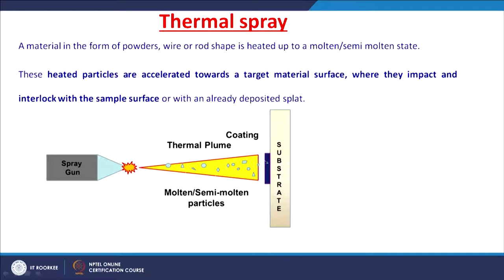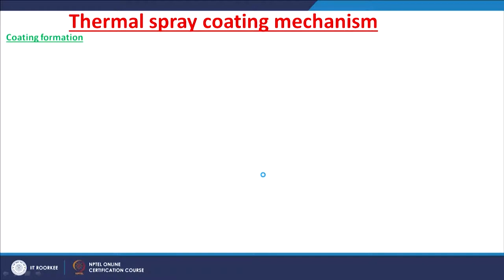After impacting, the particles interlock with each other as well as the surface and then form a dense coating. If you look at this thermal spray technique, with variation in the movement of the spray gun as well as the distance between the substrate and the spray gun, we can have a variation in the coating.